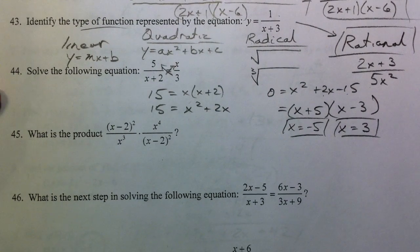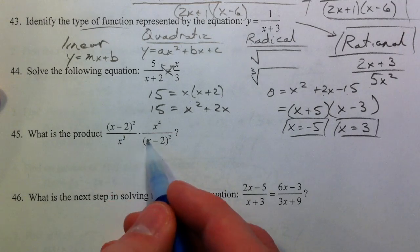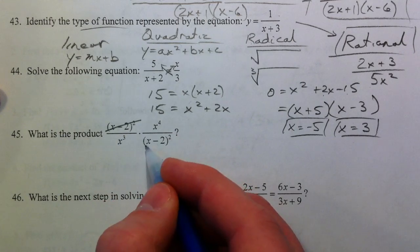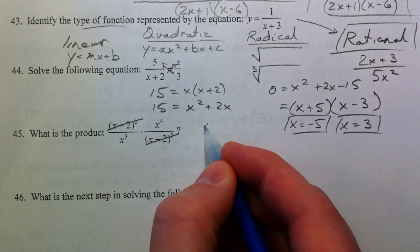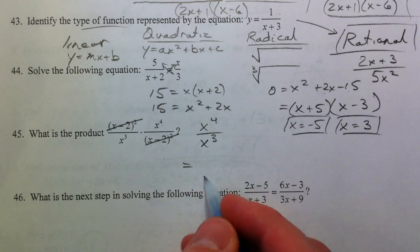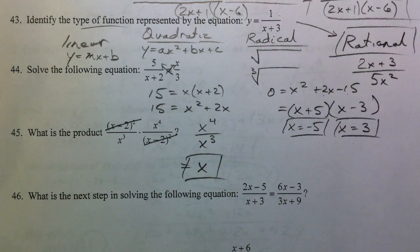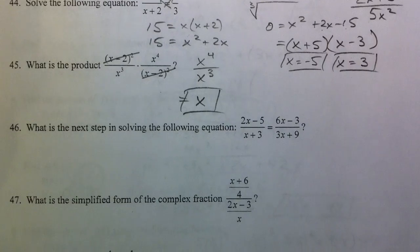All right, 45. The product of these two. What's nice is that these are already factored. And you notice that they're the same. So you get X to the 4th over X cubed. 4X is on top, 3 on the bottom, just leave 1X.